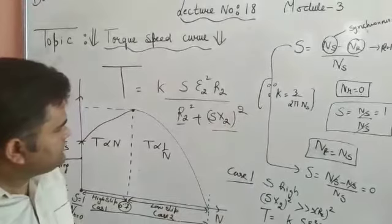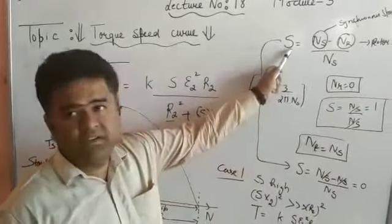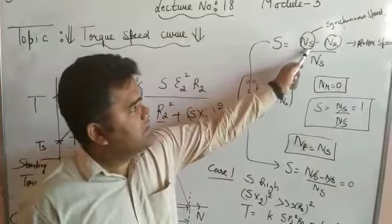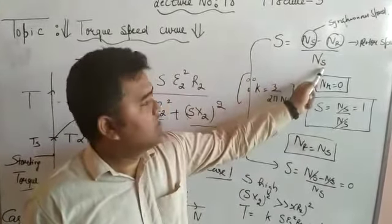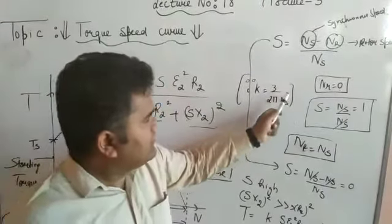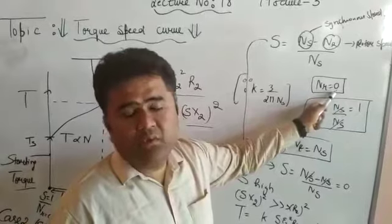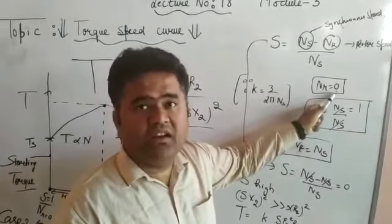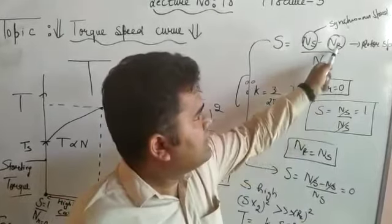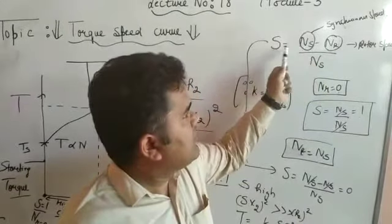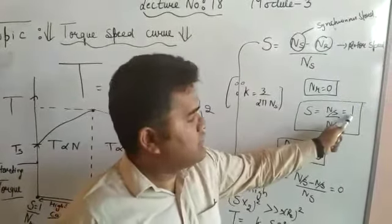Now we know that the formula for slip is synchronous speed minus rotor speed divided by synchronous speed. Now when the rotor speed is 0 at starting — when the rotor is not rotating — then when NR is 0, putting that value in, S becomes Ns upon Ns which is equal to 1.